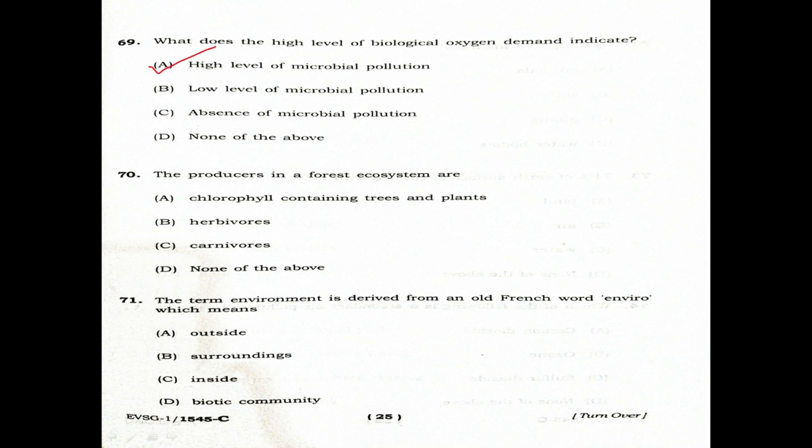Question 70: The producers in a forest ecosystem are. Option A: Chlorophyll-containing trees and plants. Option B: Herbivores. Option C: Carnivores. Option D: None of the above. The producer in a forest ecosystem is called chlorophyll-containing trees and plants.